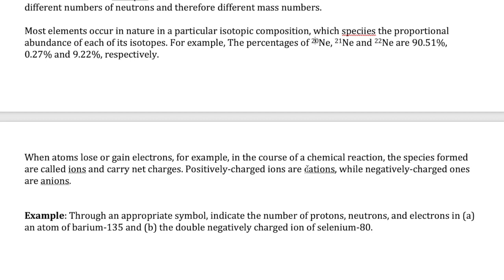If ions happen to be positively charged, they're called cations — in this case they have more protons than electrons, meaning they've lost some electrons. Negatively charged ions are called anions — in this case, they've gained some electrons.